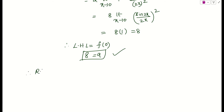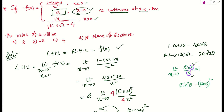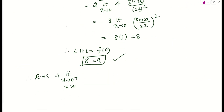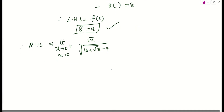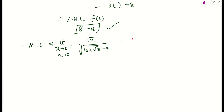Let us consider the right hand limit. Limit x tends to 0⁺, meaning x greater than 0. The function is √x / (√(16 + √x) - 4). If we check at x = 0, we get 0 / (√16 - 4) = 0 / (4 - 4) = 0/0 form.